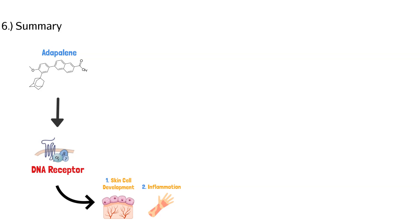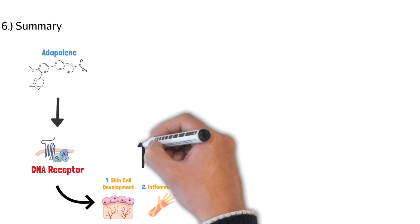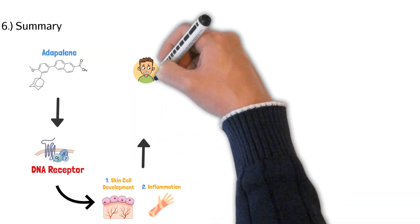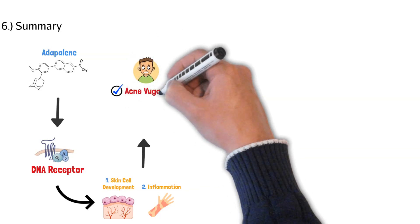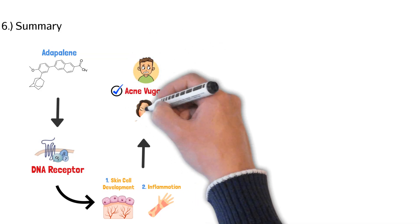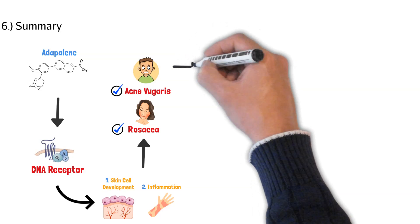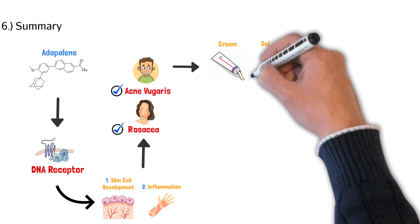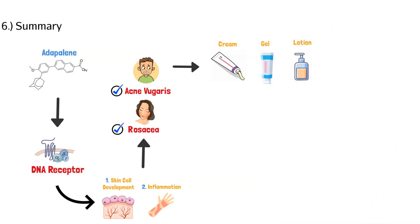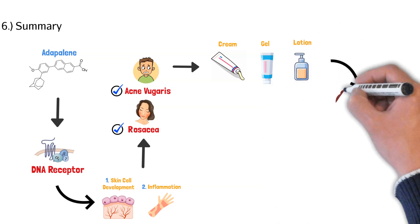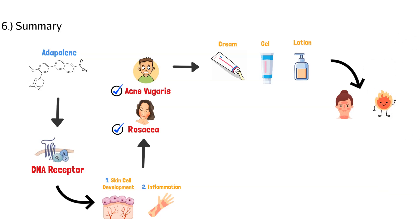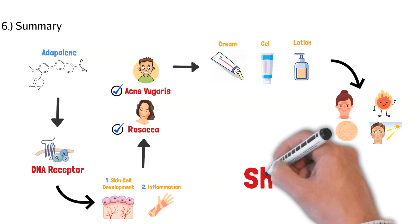We know Adapalene is used for two indications. The first one that's actually indicated is acne vulgaris. The second one we see off-label was rosacea. We know Adapalene comes in three different dosage forms, the cream, the gel, and the lotion. And when you use Adapalene, you have to be careful because it could cause redness of the skin, irritation, skin dryness, and then increased sun sensitivity. So that's why we apply it at night.